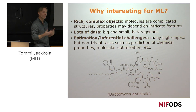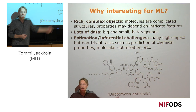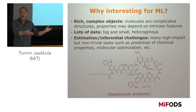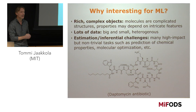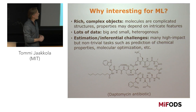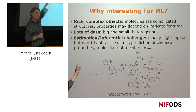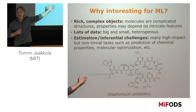Molecules are very rich and complex objects, and their properties actually depend sometimes very intricately on fine structural details. There is quite a bit of data about molecules, but it's not uniform — there is small data, big data, and heterogeneous data of different kinds. There are also tons of interesting estimation and inferential problems. A standard machine learning task is: given an object, predict its properties — already a challenging problem with these types of structures.